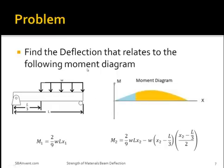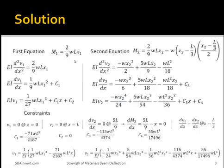Now I want you to try to determine the deflection for this problem, where the moment equations are already defined: moment M1 equals (2/9)wLx1, which represents the first part of the moment diagram; and moment M2 equals (2/9)wLx2 minus w times (x2 − L/3) times (x2 − L/3) all over 2. To solve this problem, you're going to need to integrate both of these moment equations twice.